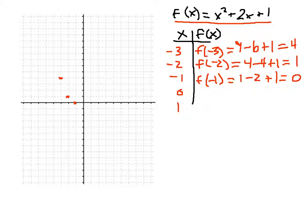We can already see it start to bend a little bit. F of 0 will equal 0 plus 0 plus 1, which is 1. That will be right here.